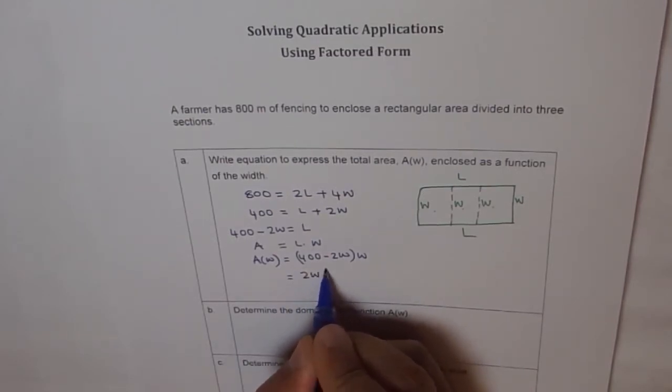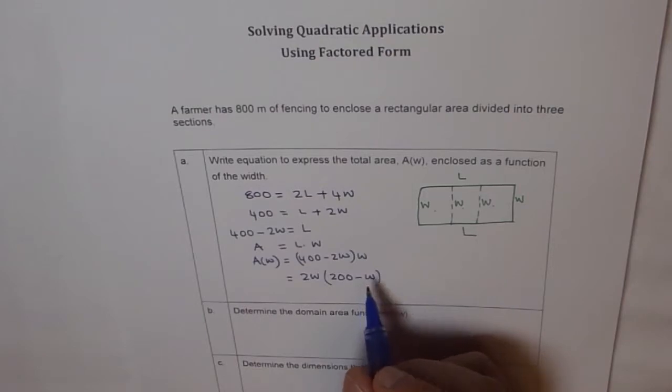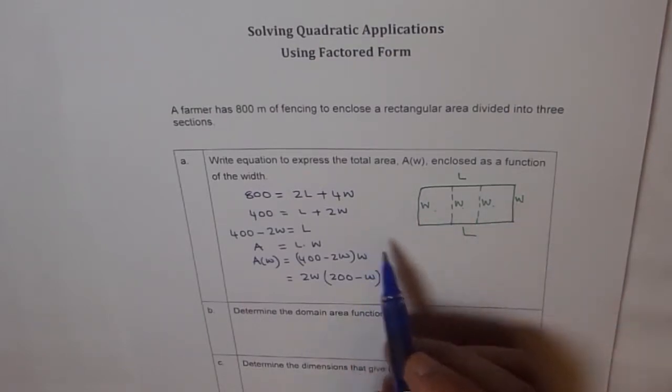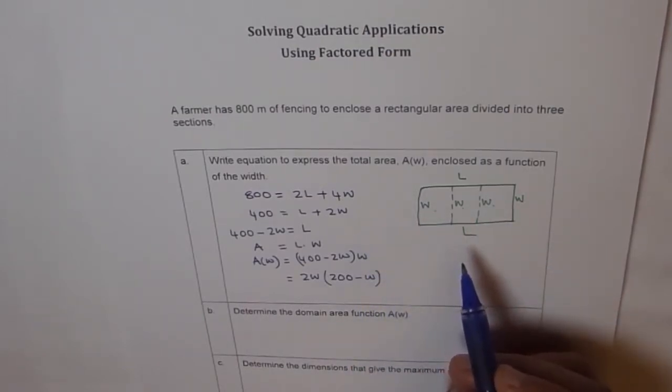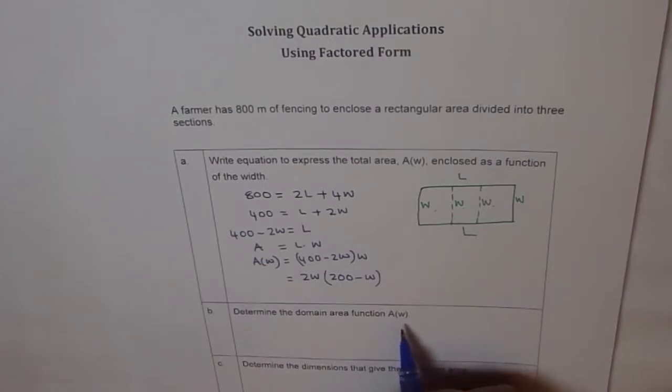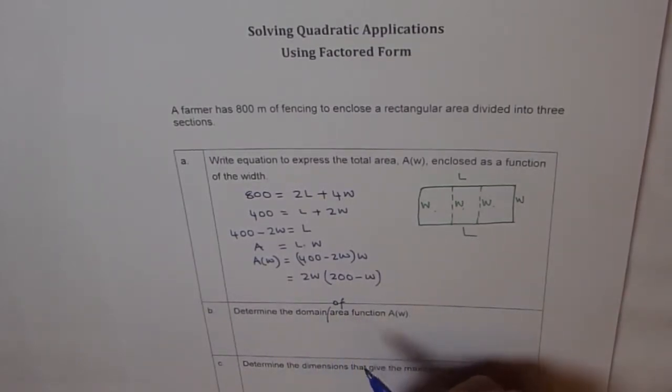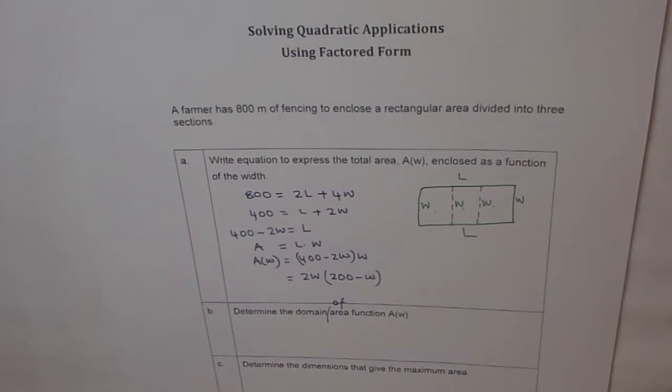We can simplify it further by taking 2 common and rewrite this. Say 2W equals to, so we factor out 2 from here, so we get 200 minus W. So that's our function which represents area of this enclosure. Now, we need to determine the domain of this area. That's what we have to find.